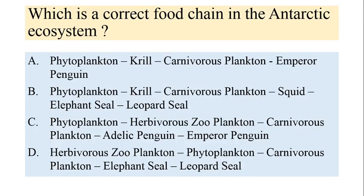Which is the correct food chain in the Antarctic ecosystem? Phytoplankton will be eaten by krill; krill will eat carnivorous plankton; carnivorous plankton will eat squid; squid will eat elephant seal; and leopard seal will eat elephant seal. This is the correct sequence of the food chain in the Antarctic aquatic ecosystem. You should know about the major food chains.